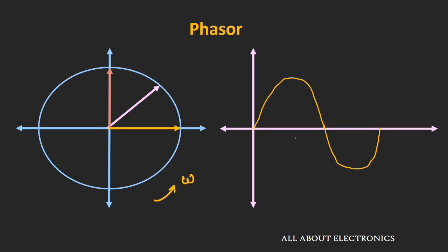As the vector rotates in an anticlockwise direction at the speed of ω radians per second, if we take the projection of this vector on the y-axis, we get the instantaneous value of the sinusoidal signal. If we plot all the values possible for this Phasor, we can reproduce the sinusoidal signal.